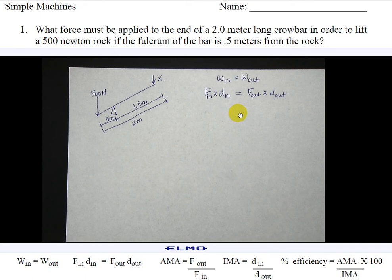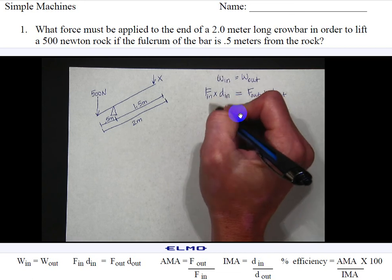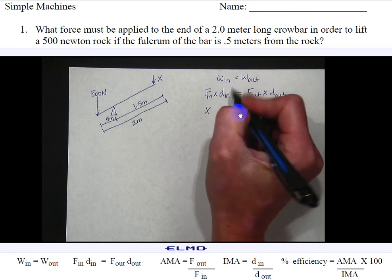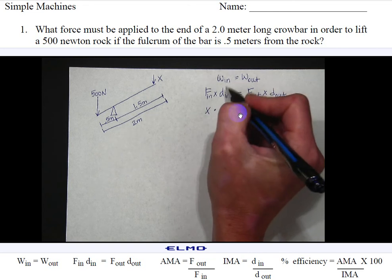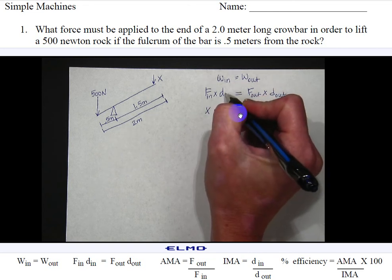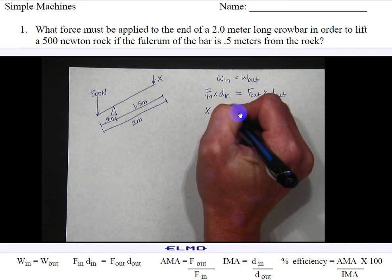Now we just need to substitute values. My input force represents how much I'm going to exert on the crowbar to lift the rock. So I don't know that force so I'm going to put in an x. Then I'm going to use a dot for times so I don't get confused. And the distance of the force that I'm exerting from the fulcrum is 1.5 meters.